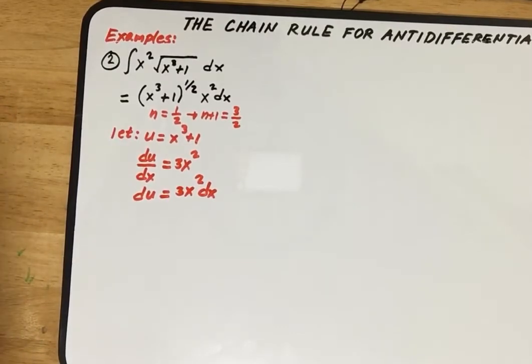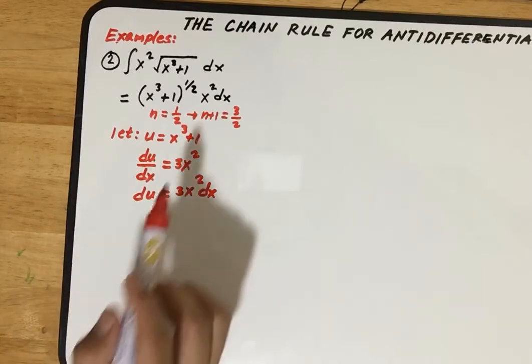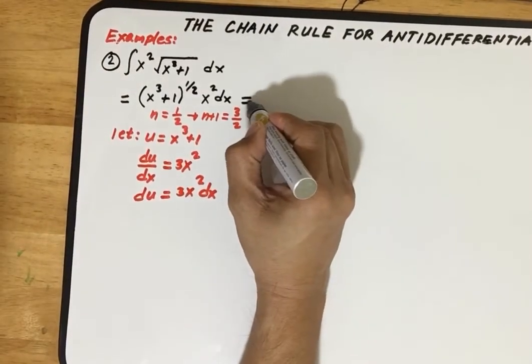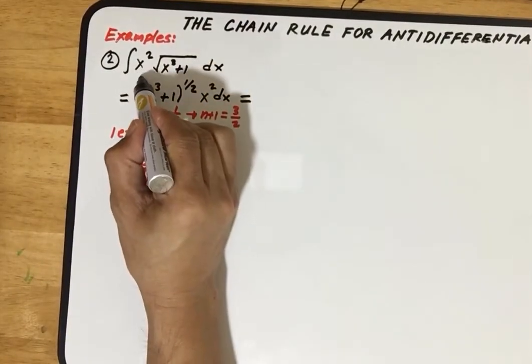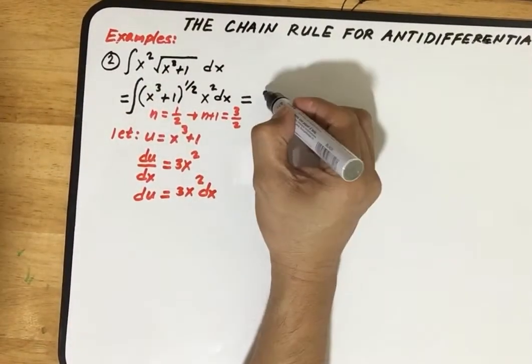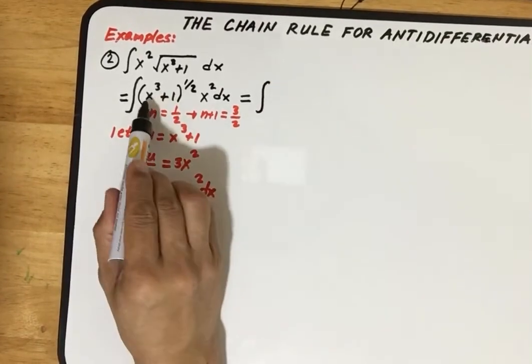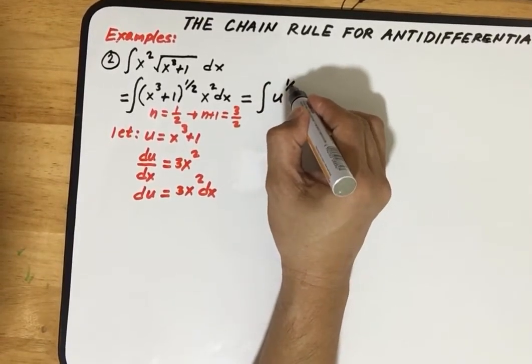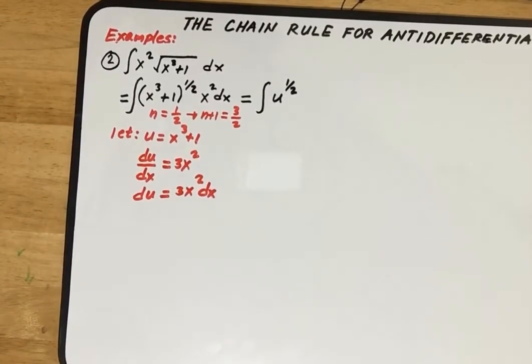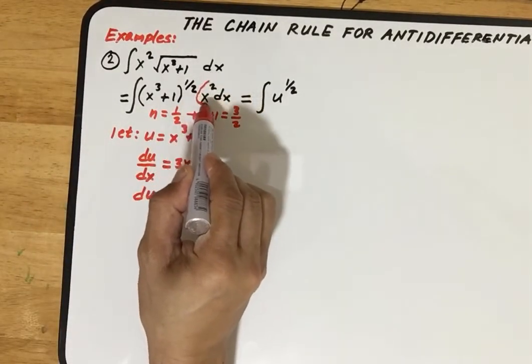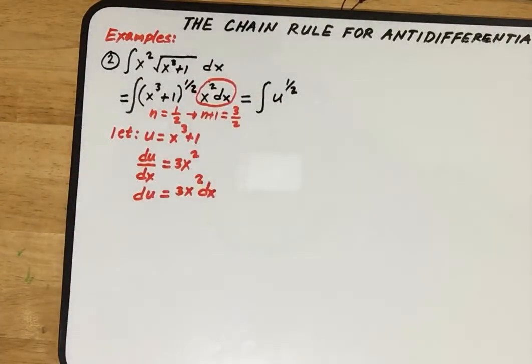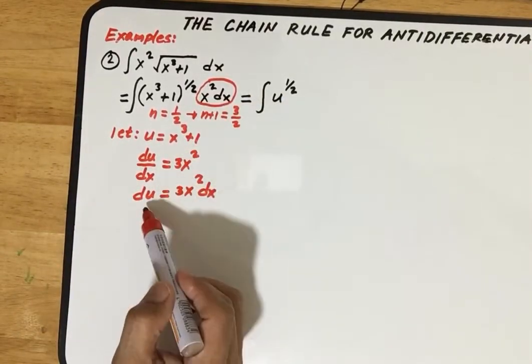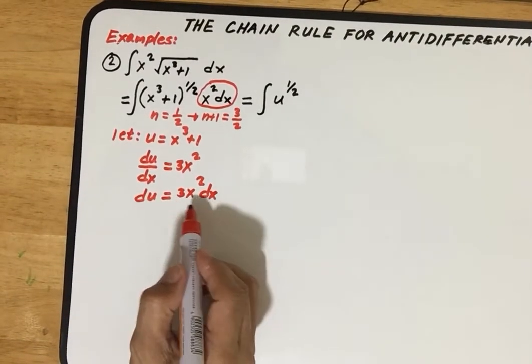If you look at the given, this part here... by the way we forgot to write the integral sign. So integral of this part we let equal to u, so we can write this as u to the power one-half. Then we need to find this part in terms of du. Our du equals 3x squared dx.